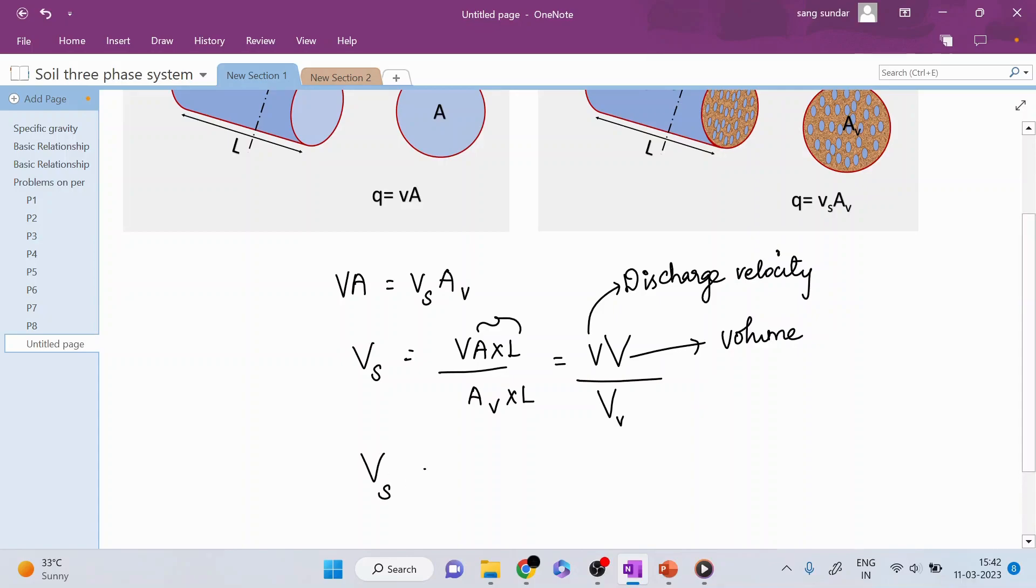So, Vs equals capital V, which is volume here, divided by void volume, times lowercase v, which is your discharge velocity. What is volume of voids divided by total volume? That gives you porosity. So, Vs equals v divided by n.